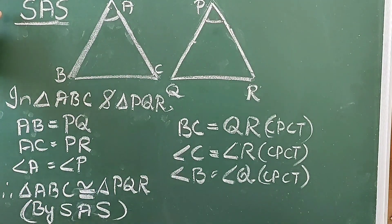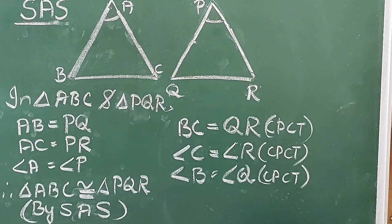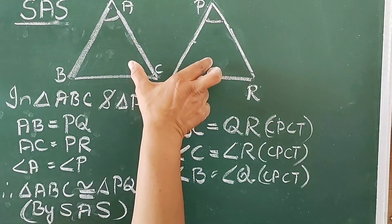Now we will discuss the first condition, that is SAS — Side Angle Side. The condition says that two triangles are congruent if two sides and the included angle of one triangle are equal to the corresponding sides and included angle of the other triangle. This is known as SAS congruence.